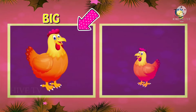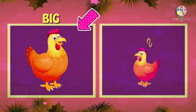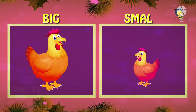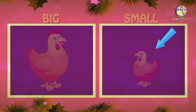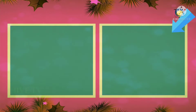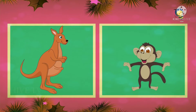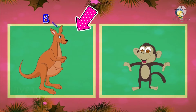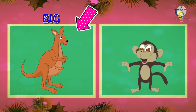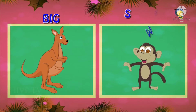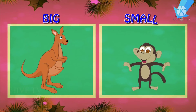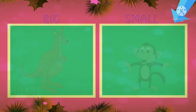Mama and baby. Mama hen is big and baby hen is small. Right. Kangaroo and monkey. Kangaroo is big and monkey is small. Very good.